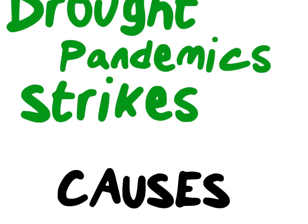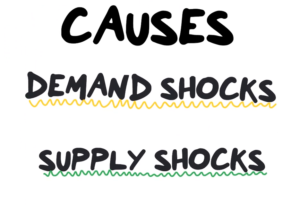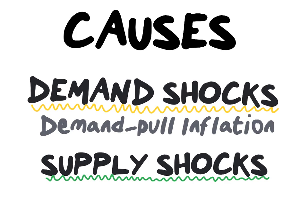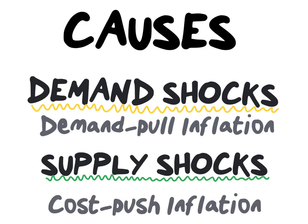Let's recap our causes of inflation. Demand shocks give rise to demand-pull inflation, which occurs when aggregate demand exceeds the capacity of production in the economy. Supply shocks give rise to cost-push inflation, which occurs when there are disturbances in the production process, in turn reducing aggregate supply.